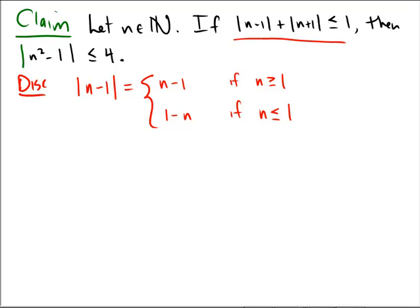Similarly, the absolute value of n plus 1 is simply n plus 1 if n is greater than negative 1, and it equals negative n minus 1 if n is less than or equal to negative 1.